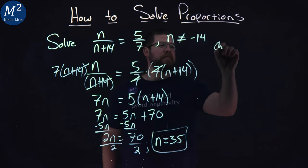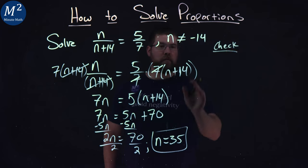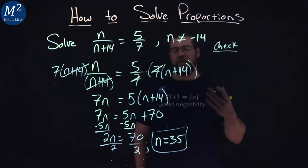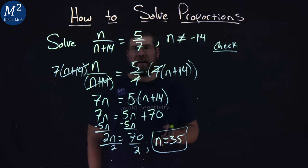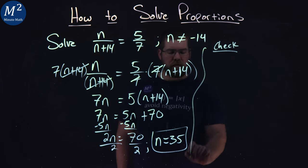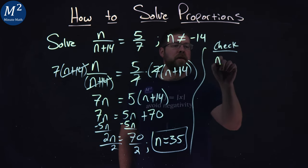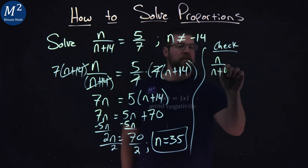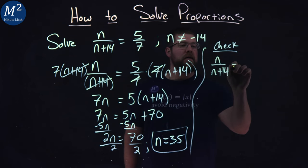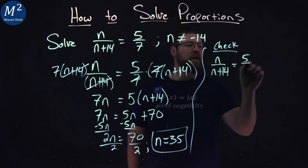Let's go check that. Alright. Luckily, it wasn't negative 14, so we're good. But we want to check to make sure that 35 is our correct answer. So to do that, I'm going to rewrite my problem: n over n plus 14 equals 5 sevenths.